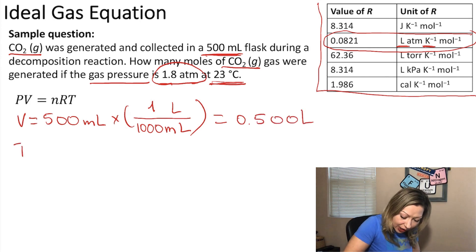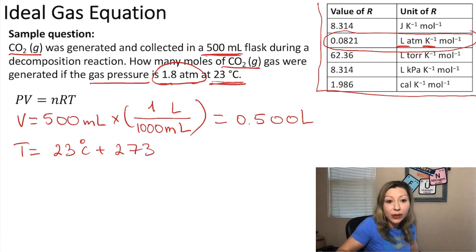In order to convert the temperature we need to take 23 degrees Celsius and add to it 273.15, but because of the sig figs I'm only adding 273 which equals 296 Kelvin.